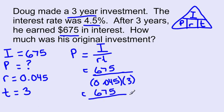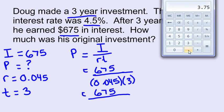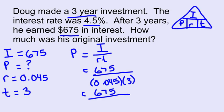I'm going to need to punch in 0.045 multiplied by 3 to give me my denominator, which is 0.135.